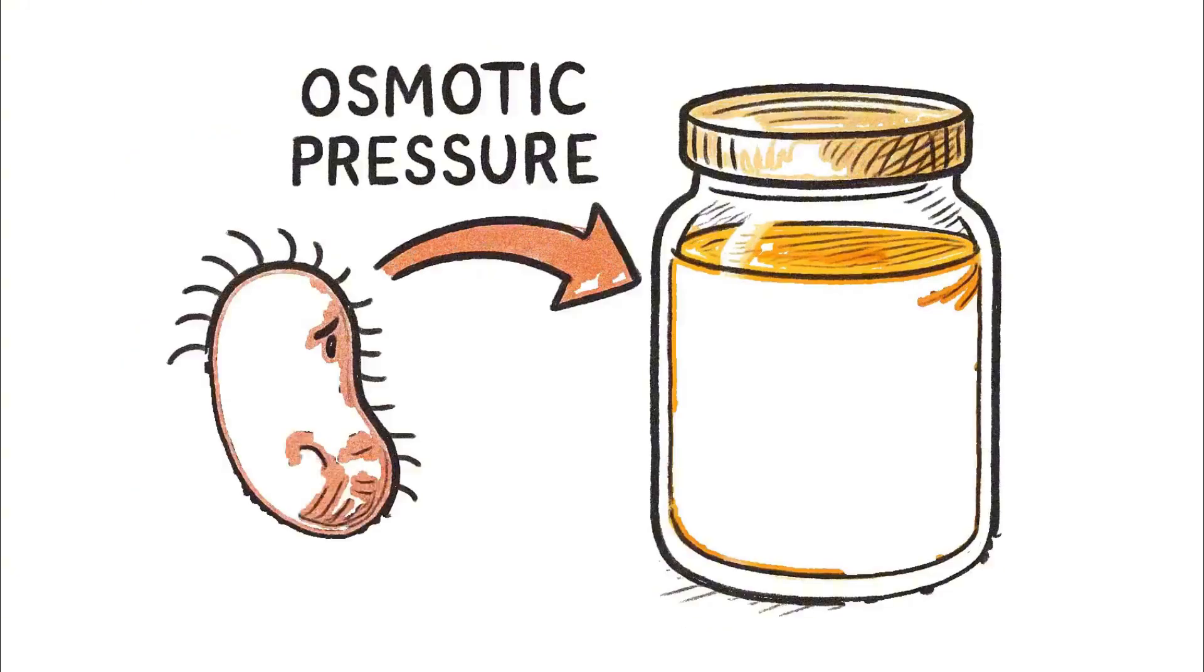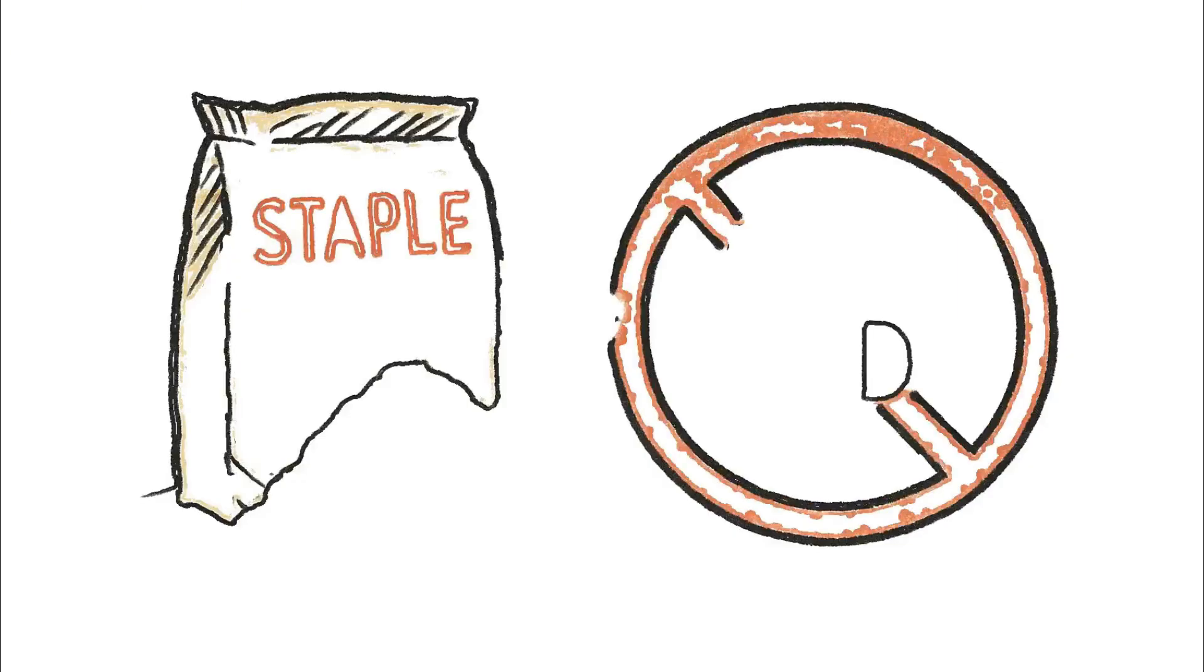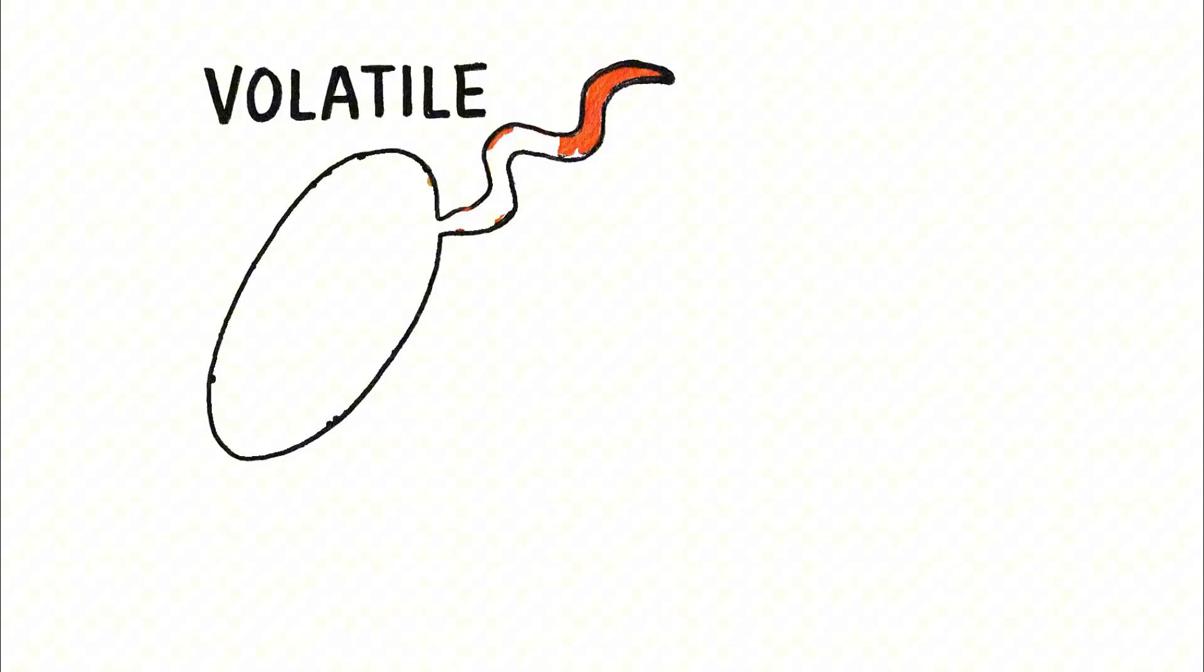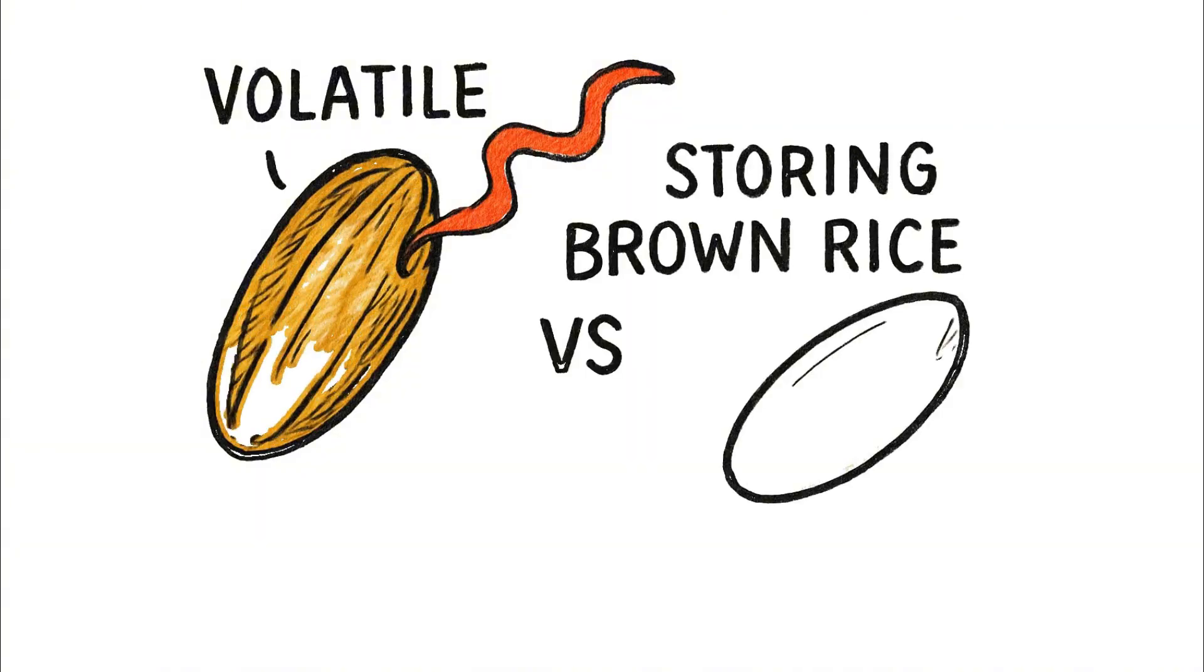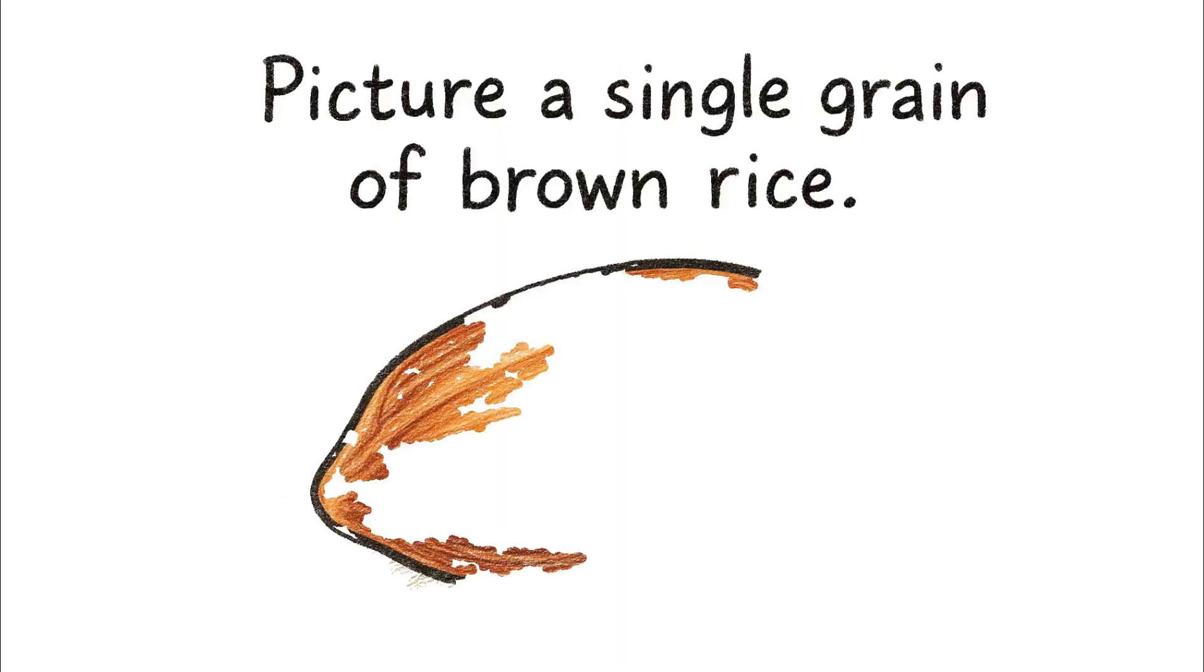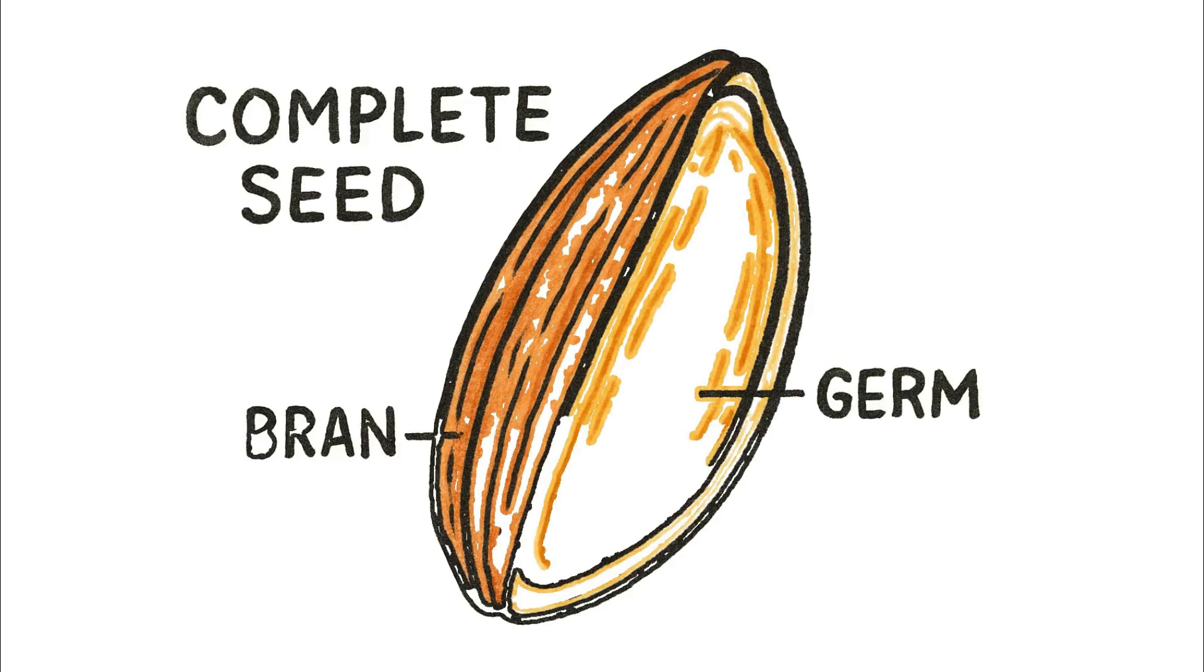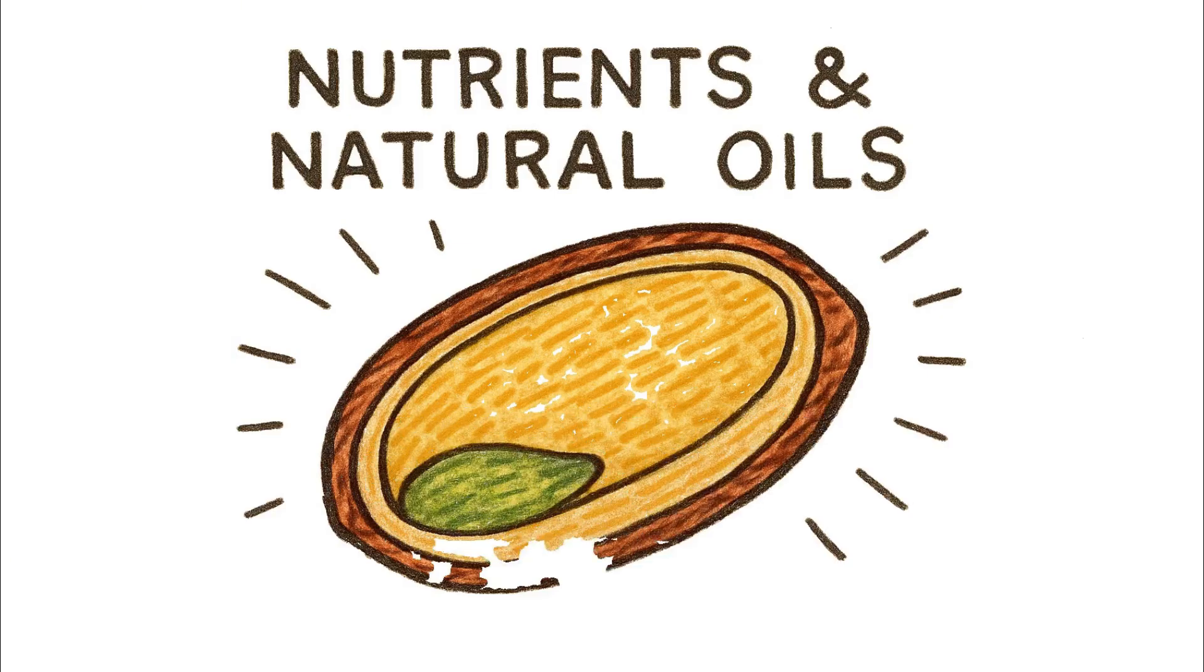We've seen how honey utilizes osmotic pressure to keep bacteria at bay. Our next staple food relies on the complete elimination of a specific chemical component: fatty acids. This volatility of fatty acids is exactly why storing brown rice is a rookie mistake, while white rice is a survival king. Picture a single grain of brown rice. It's a complete seed, wrapped in its bran and germ. These layers are where its nutrients and natural oils are concentrated.